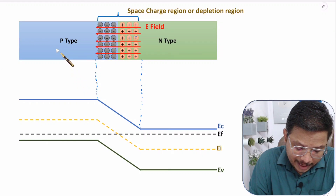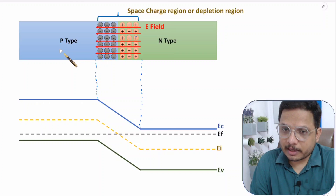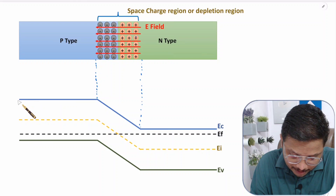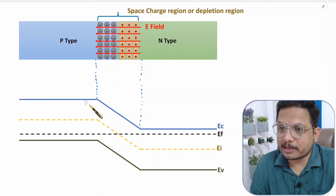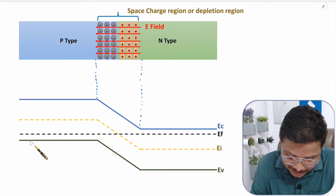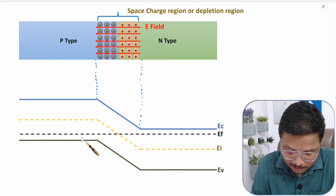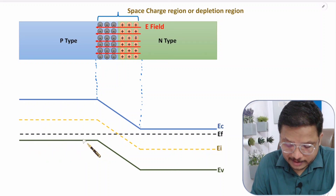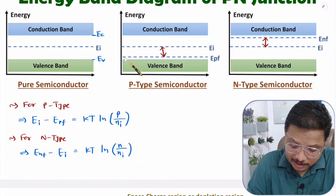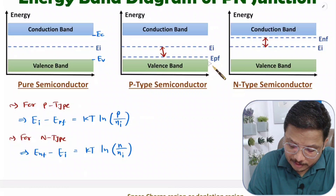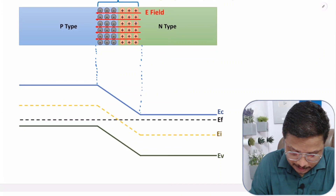As I have explained, in P-type this is my conduction band energy EC and this is my valence band energy EV. Then Fermi energy level will be there nearer to valence band. With P-type, Fermi energy is nearer to valence band, this is EV. So Fermi energy is nearer to valence band, that is how it is shown here.